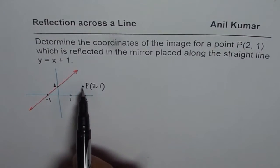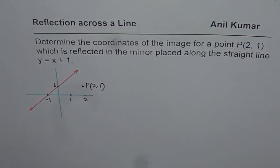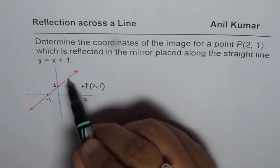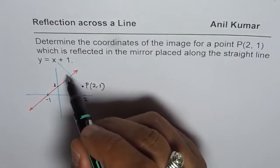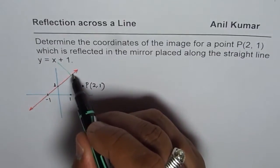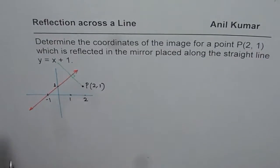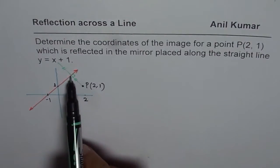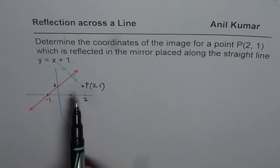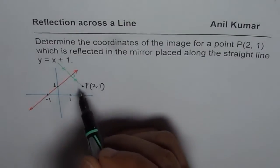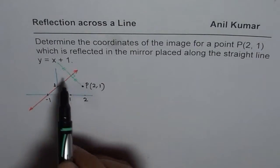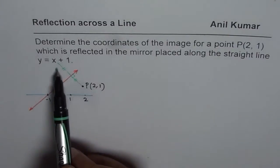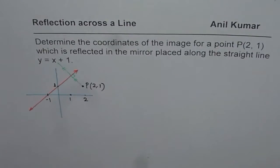We need to find the image of this point when reflected along this line. To do this, we have to understand that the perpendicular from P to the line must be drawn, and the distances of P and its image from the line should be the same — images are found as far behind as in front. That is the property we are going to use. Since this is a rough sketch, we are not reading values from the graph; we'll calculate them.